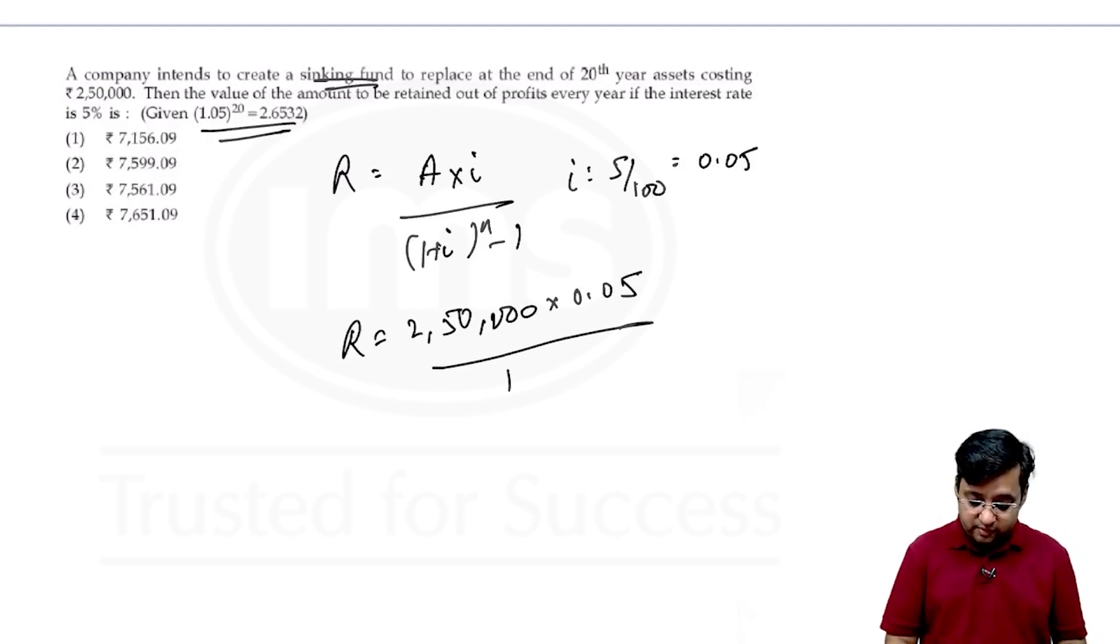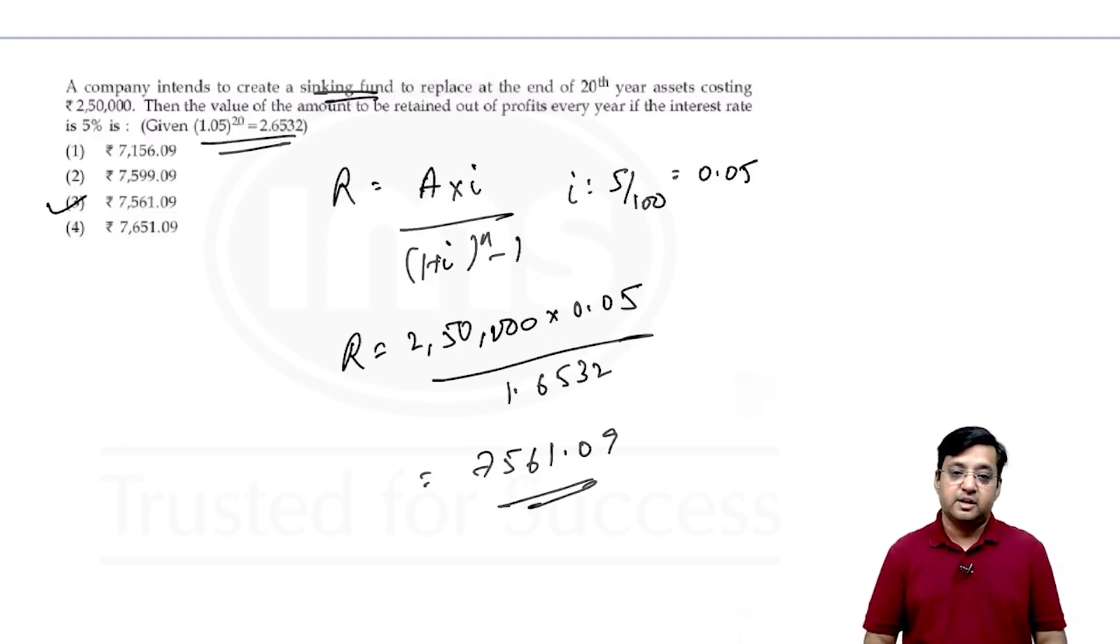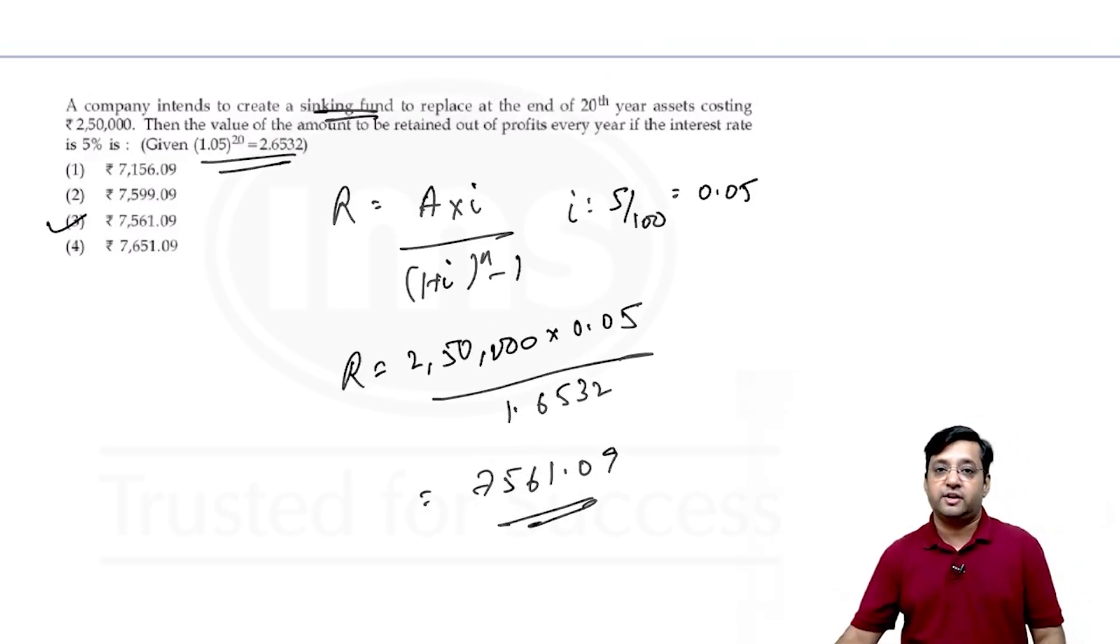Now r will become 2 lakh 50,000 into 0.05 divided by, look we have given this value. So we will do 1 minus and that will give me 1.6532. Now you have to do the calculations. We can skip it. So after calculation you will get 7561.09 which is our third option. Just remember the formula, you have to just use the formula to get your answer. Thank you. Have a nice day.